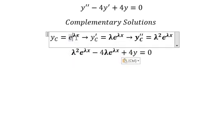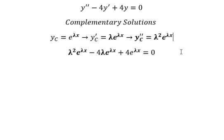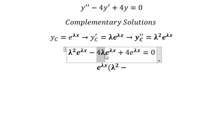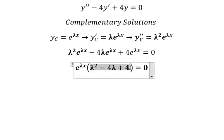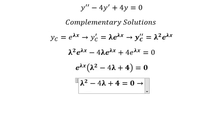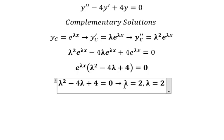So in this case I will put this one in here and this one in here. We have e to the power of lambda x — we can do factorization — and so we have lambda squared minus 4 lambda plus 4. Now we need to find the solutions of this one.